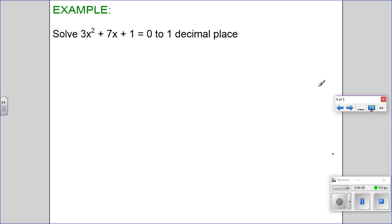One final example. We've got 3x² + 7x + 1, so we're getting here an a value not equal to 1, but that doesn't change in the slightest what we do. We need to state our a, b and c values and we need our quadratic formula.